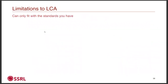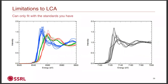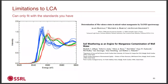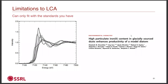Some limitations of LCA: you can only fit with the standards you have. Without the right standard — in one case a Rietveldite sample — you'd be unable to model the spectrum. There are published standards libraries and databases to draw from, including two extensive manganese databases referenced here, including the paper that established the combo method, plus a publication with a very good iron XANES library.